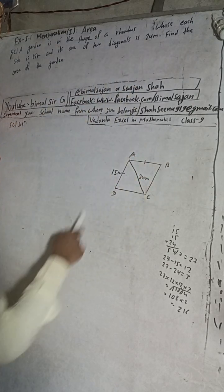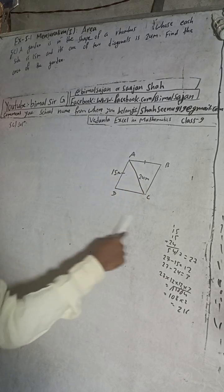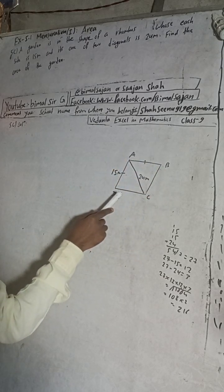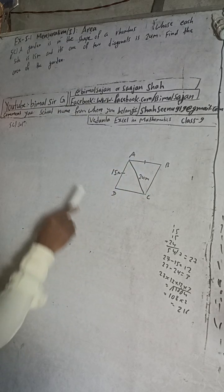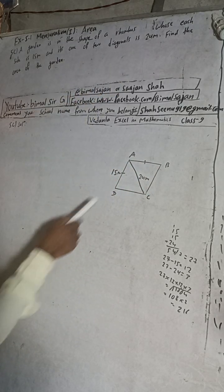So here you can see the figure. This is a rhombus and the shape of this garden is in this rhombus. Here given that each side is 15 meters.